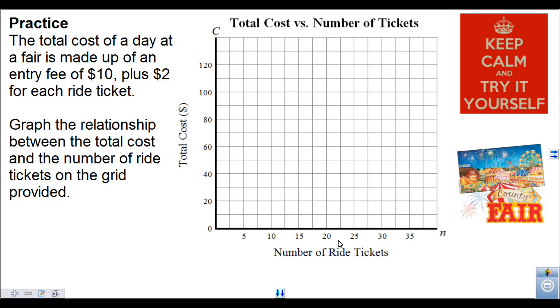So you're going to give this question a shot. The total cost of a day at a fair is made up of an entry fee of $10 plus $2 for each ride ticket. You're going to graph the relationship here between cost and the number of rides. Remember, you need two points. So pause the video, come up with those two points, and when you're ready to check out your answer, press play. Good luck.